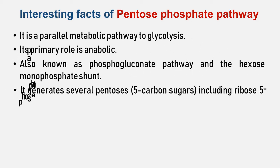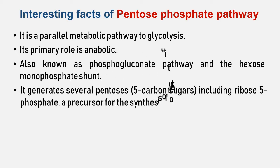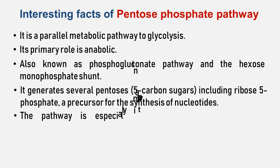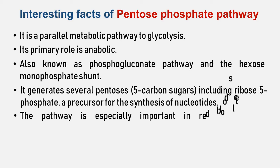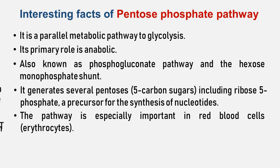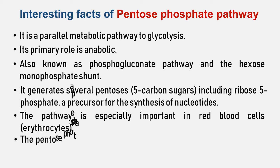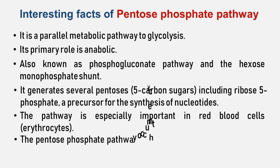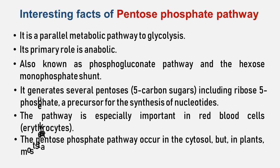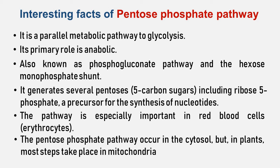It generates NADPH and pentose 5-carbon sugar as well as ribose-5-phosphate. Ribose-5-phosphate is a precursor for the synthesis of nucleotides. The pathway is active in many organs such as the liver, adipose tissue, adrenal cortex, thyroid, testis, ovary, and lactating mammary glands, but is especially important in red blood cells — erythrocytes — as it detoxifies reactive oxygen species.